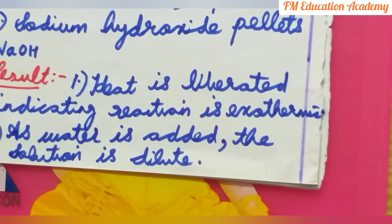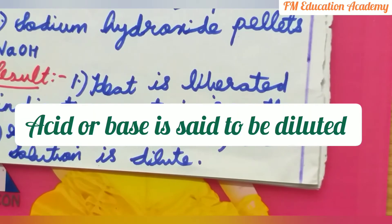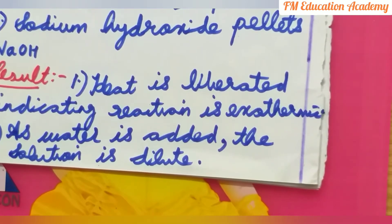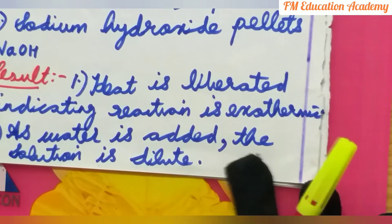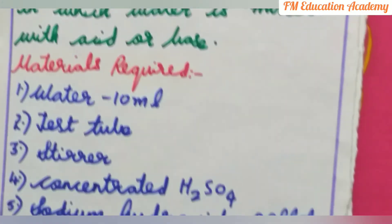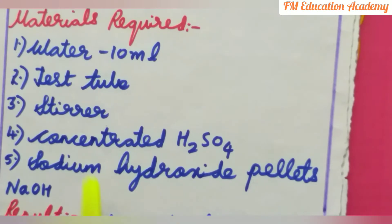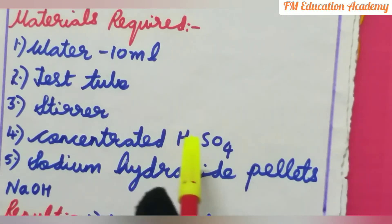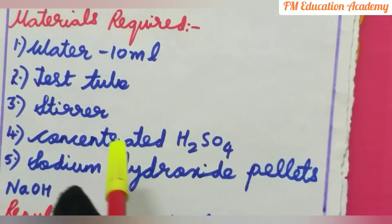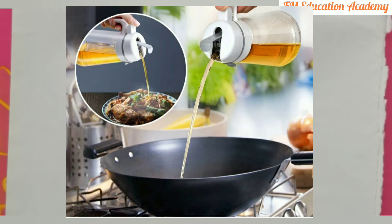The acid or base is said to be diluted — that is why we say dilute acid or dilute base — meaning it has more water and less acid or base. In our experiment, we used concentrated sulfuric acid, meaning we had more amount of acid and less amount of water.